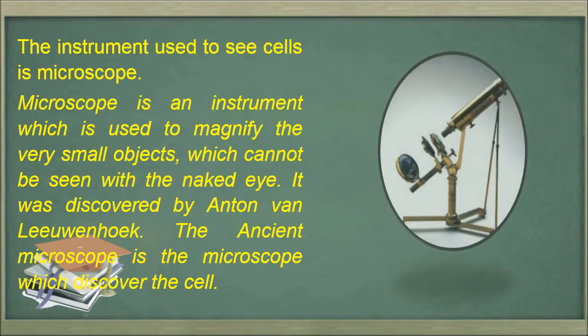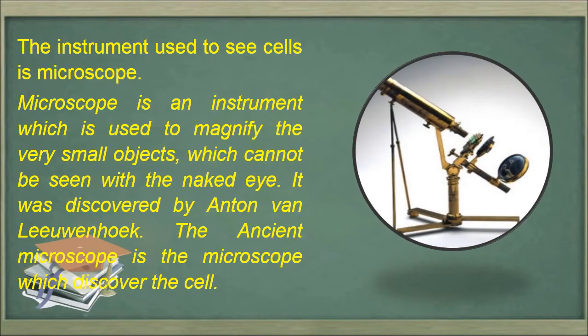This is a picture of a very old microscope — initially when microscopes were made, they looked like this. A microscope is an instrument used to magnify very small objects which cannot be seen with the naked eye. It was with an early, simple microscope that the cell was first discovered, since microscopes at that time were not very advanced.